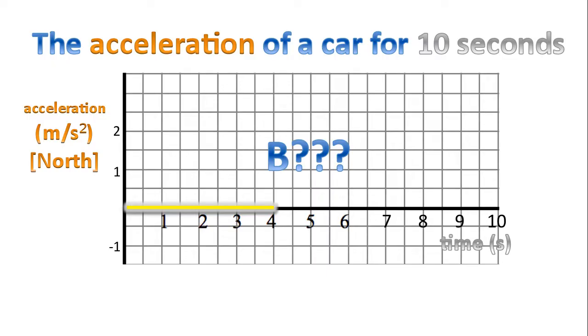All right, now that we've plotted the acceleration for the first part of the graph from zero to four seconds. What about the next section of the graph? Section B.